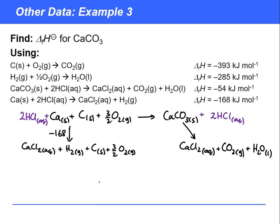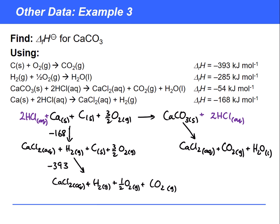Now we have two other points and need to connect them. Carbon is involved in a reaction where we take carbon and one oxygen to make CO₂, and that's good because we've got CO₂ over here. Calcium chloride isn't going to do anything, and hydrogen stays the same. Carbon becomes CO₂ leaving half an O₂, and the enthalpy change for that is -393 kJ/mol. Then hydrogen and the half O₂ can make H₂O, with an enthalpy change of -285 kJ/mol.